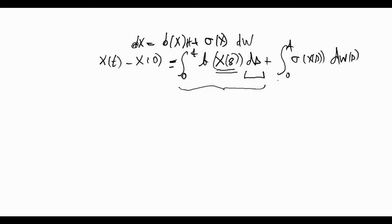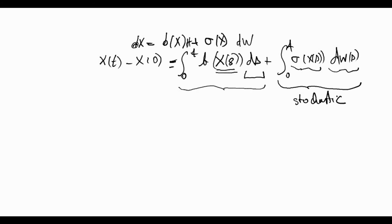The second term is new: it is the stochastic term. Although σ can be thought of as a constant, we will have to define what is the meaning of dω(s) and what is the integration over it. This is the introduction of the stochastic integral, which will take us a few classes.